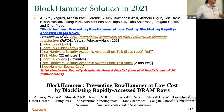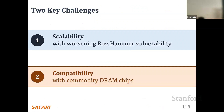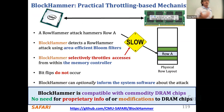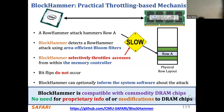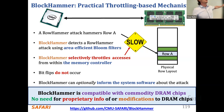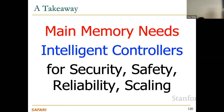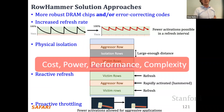Another solution idea we pursued was using area-efficient Bloom filters in the memory controller to detect potential aggressor rows and selectively throttle access to those rows, preventing bit flips — you can prove the security properties, and you can also inform the system software about an ongoing attack. This works if the RowHammer threshold is around 1,000 activations, but as it goes below that — which is where we're heading today — the solution incurs higher overhead, so it's another example of why we need more intelligent memory controllers.